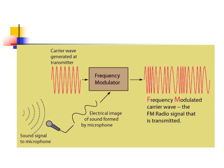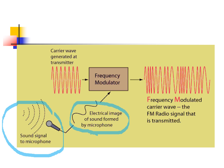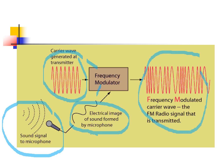How is an FM carrier wave added to a signal? This diagram shows the process. The sound signal from the microphone is converted into an electric signal and enters the frequency modulator. The carrier wave that is generated also enters the frequency modulator. After passing through it, a frequency modulated carrier wave is released and transmitted into the atmosphere. This is similar to how an FM radio signal is transmitted.